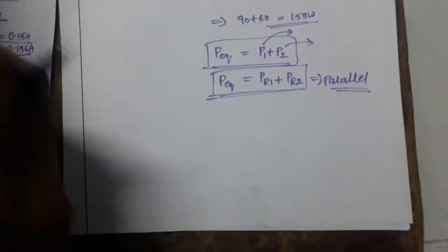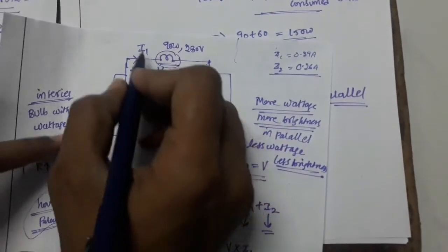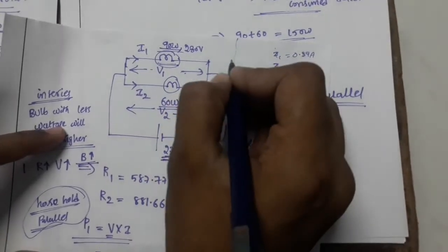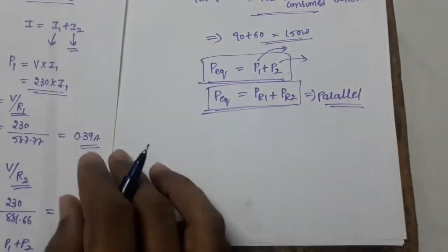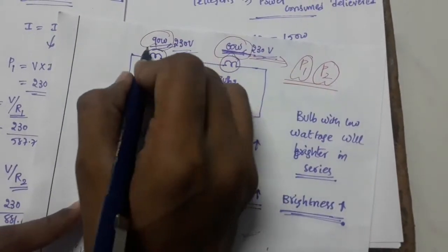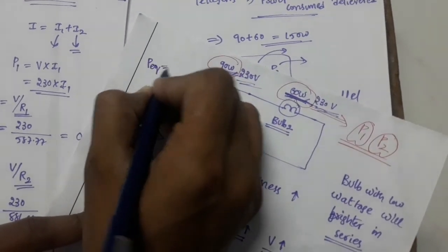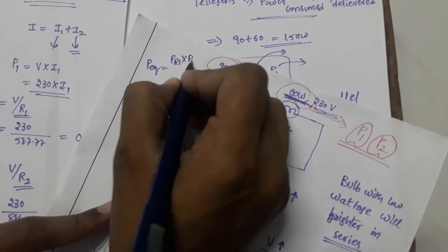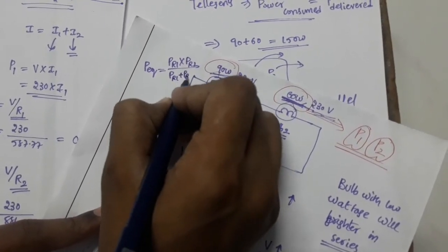When connected in parallel, you can add the ratings directly for finding the power equivalent. When connected in series, we have to use the formula: P equivalent equals (PR1 × PR2) / (PR1 + PR2).